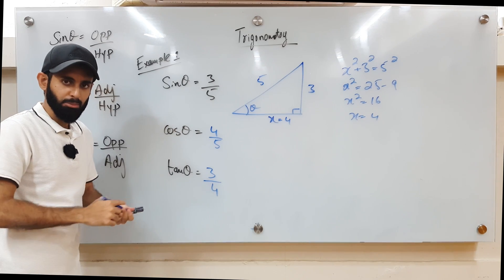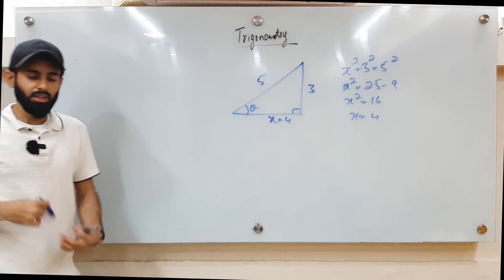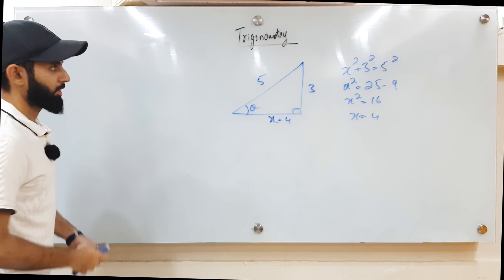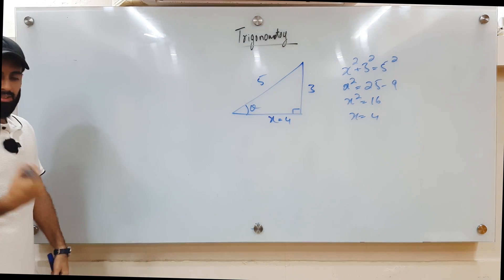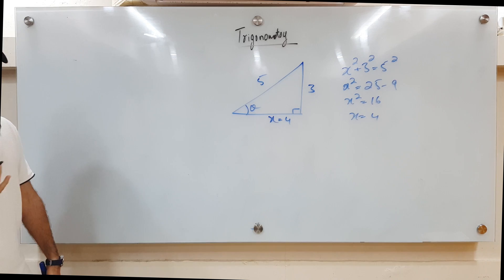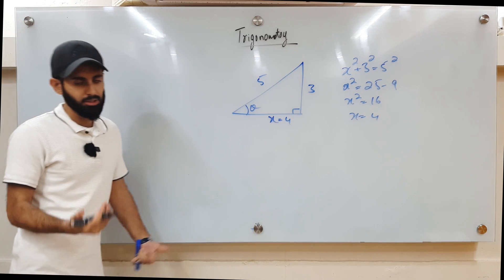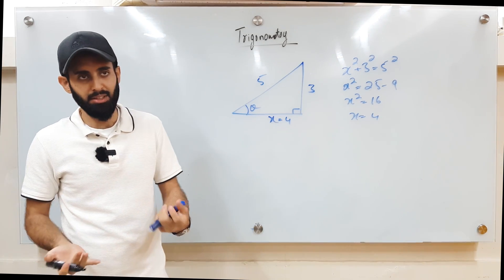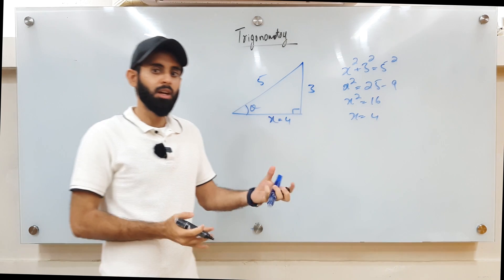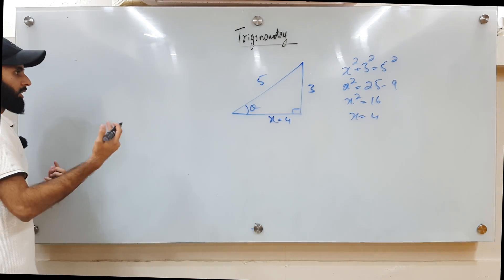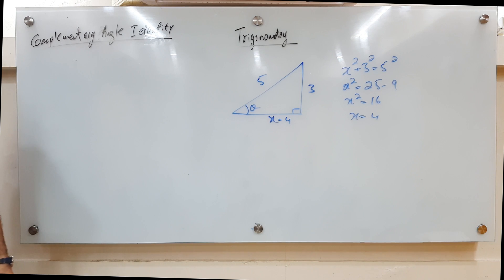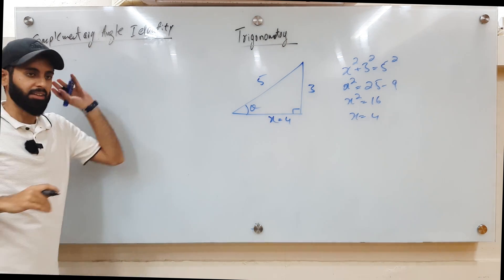Now we'll build on it gradually. The second most important concept in Ad Math trigonometry is the complementary angle identity. Complementary angles are angles that sum to 90 degrees — for example, 30 and 60, or 50 and 40.